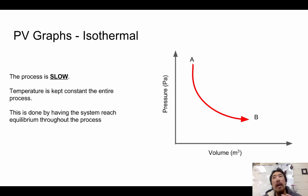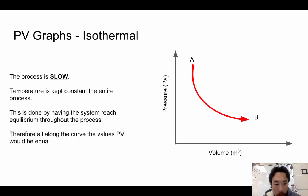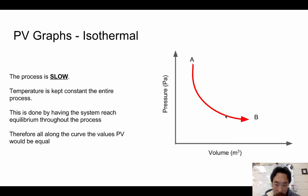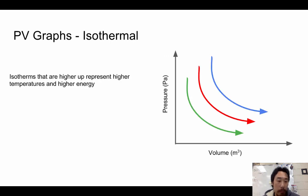The key point is that throughout the entire process, the system is allowed to reach equilibrium. All along the isothermal curve, we have the same PV values — if you multiply P times V at any point on the curve, you always get the same number, because it represents the energy at that point.